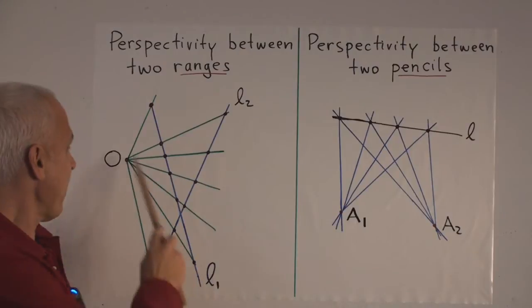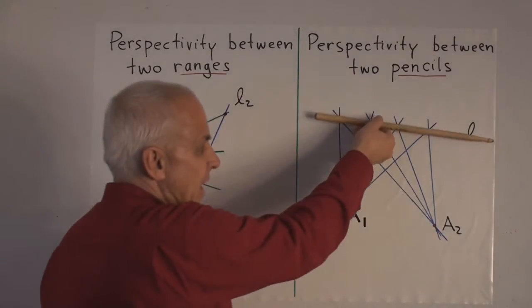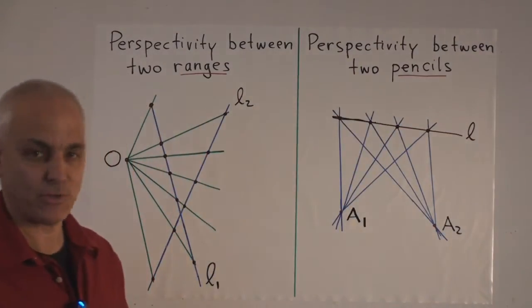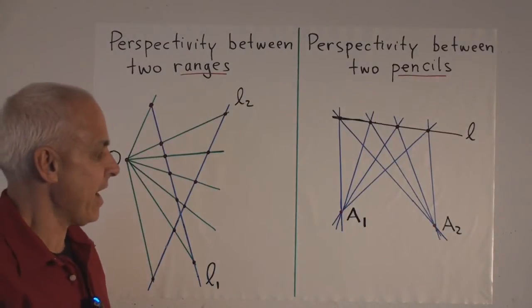We can talk about a perspectivity between this pencil and this pencil in an exactly dual way. So what do we need? Instead of having a point of perspectivity, we need a line of perspectivity. So let's suppose we're given the line L.